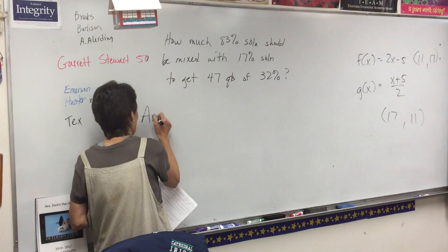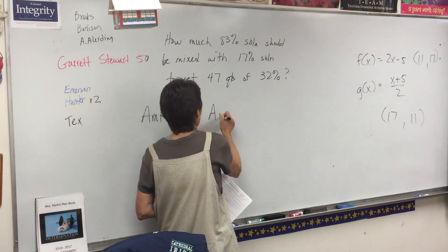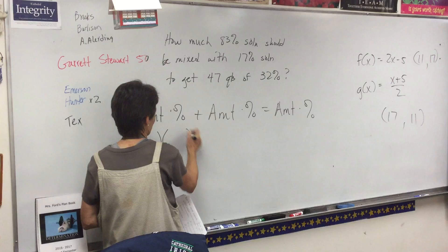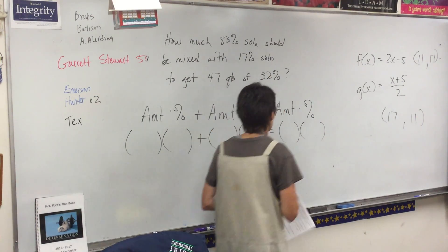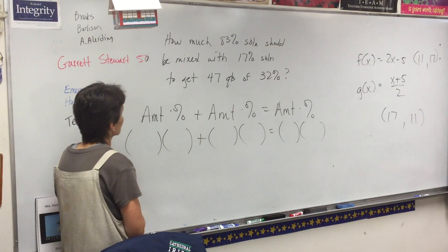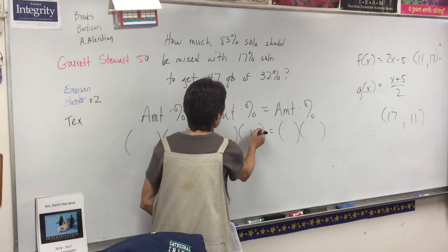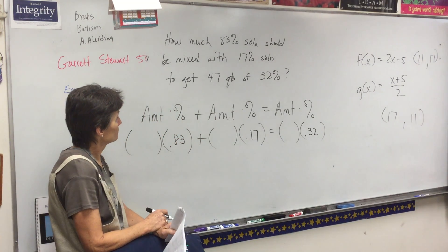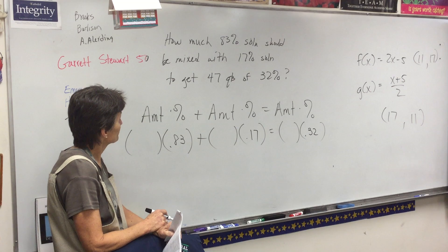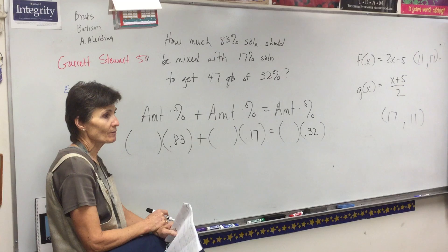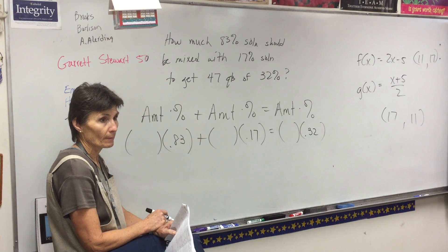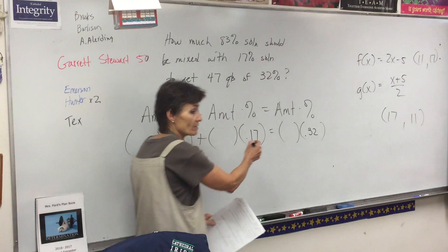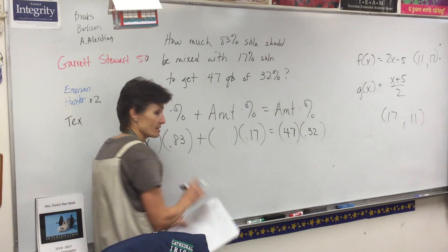So I have amount times percent plus amount times percent equals amount times percent. Let's fill in all of our percentages. Okay, so we have 0.83, 0.17, and 0.32. Now here's where the difference is.